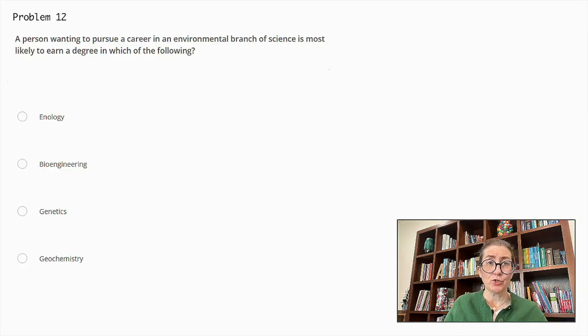A person wanting to pursue a career in an environmental branch of science is most likely to earn a degree in which of the following? Enology, bioengineering, genetics, or geochemistry? The correct answer is geochemistry. This field involves the study of the chemical composition of the earth and its processes. It is directly related to environmental science as it deals with the impact of chemical processes on the environment such as pollution, natural resource management and environmental remediation.